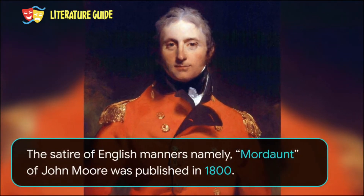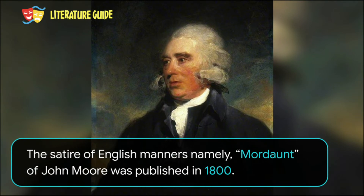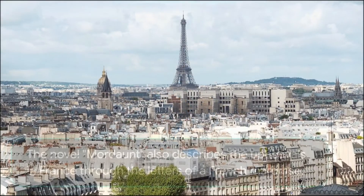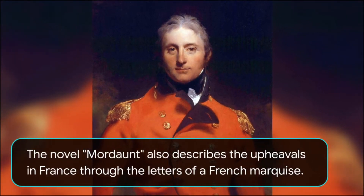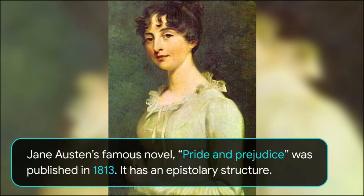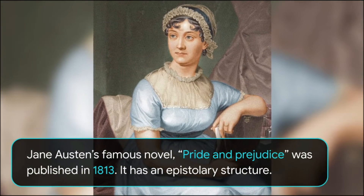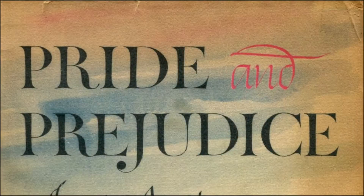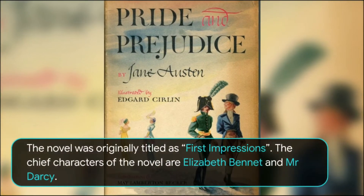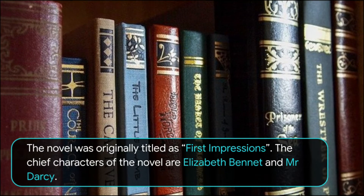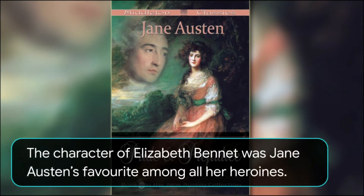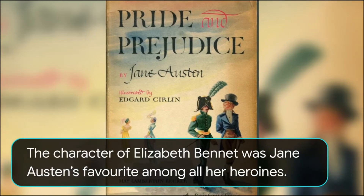The satire of English manners, Mordaunt by John Moore, was published in 1800. The story moves forward as the characters communicate through letters, and it also describes the upheavals in France through the letters of a French marquise. Jane Austen's famous novel Pride and Prejudice, published in 1813, has an epistolary structure. Its title was taken from Fanny Burney's novel Cecilia, and the novel was originally titled First Impressions. The chief characters are Elizabeth Bennet and Mr. Darcy, and Elizabeth Bennet was Jane Austen's favourite among all her heroines.